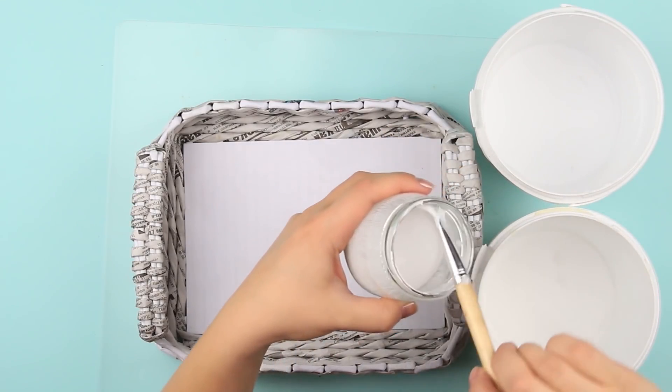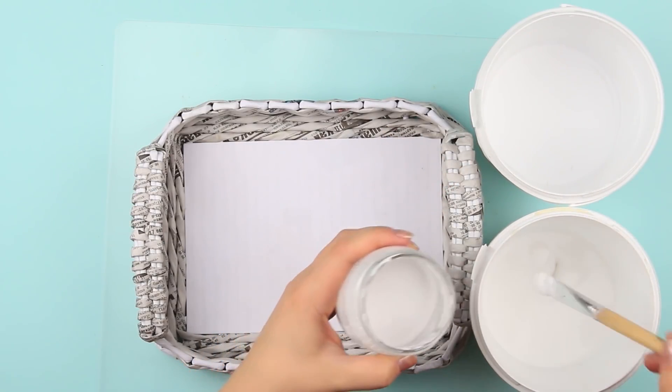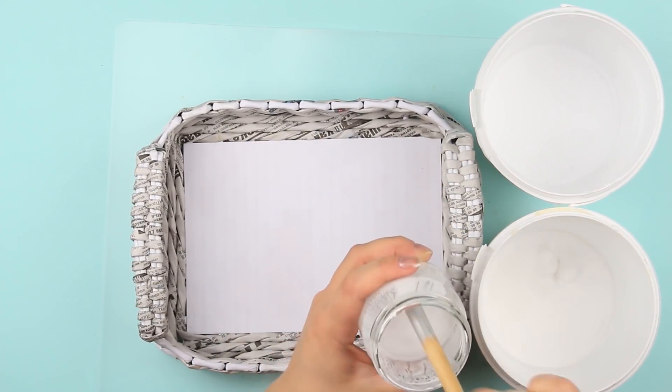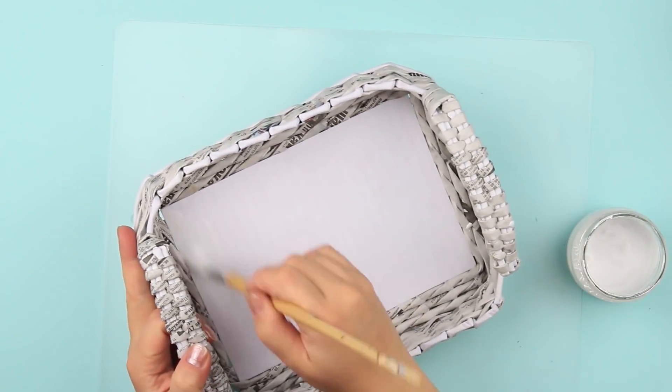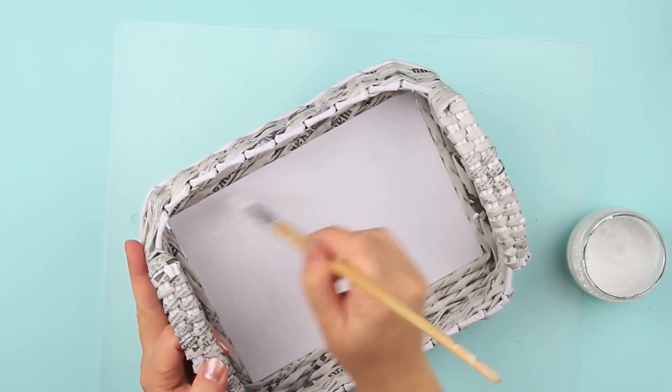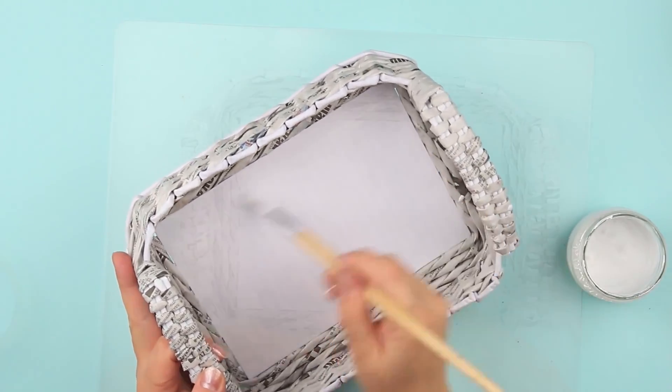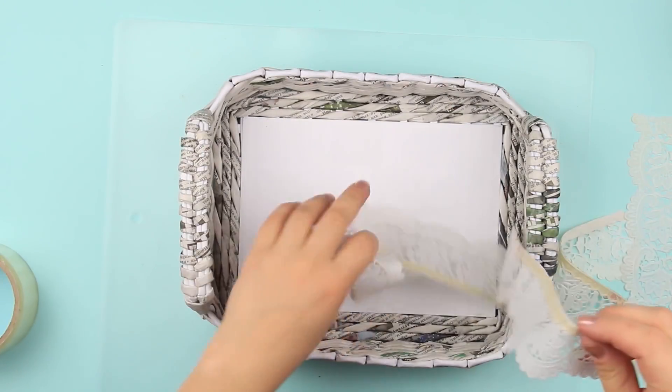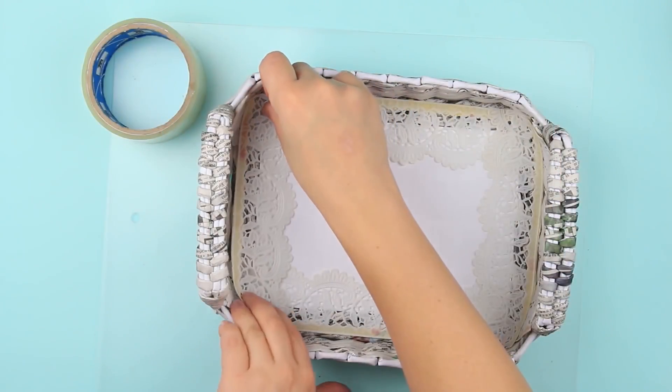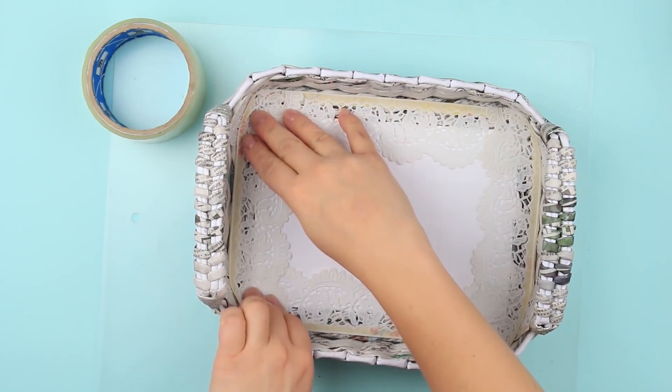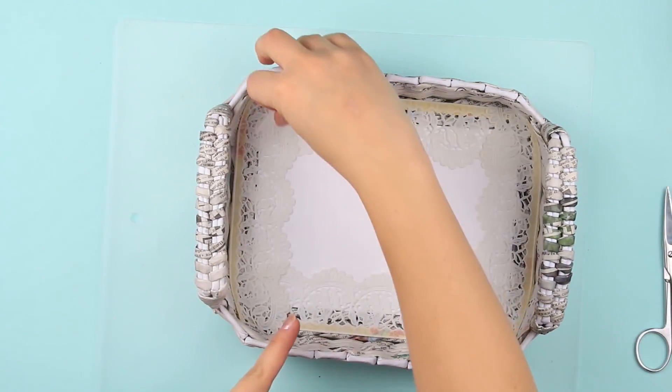Mix white glue, water-based paint, and water in equal proportions. Coat with a brush starting inside. When the tray is dry, attach a lace stencil to the bottom using tape.